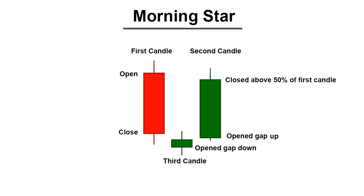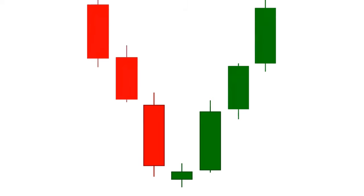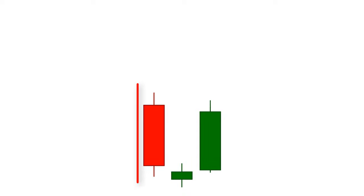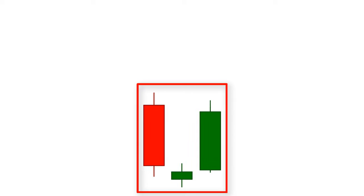Hey traders, welcome back to Easy Trading Tips. In this video tutorial, we will learn how to identify the perfect Morning Star candlestick pattern. The Morning Star candlestick pattern is a bullish reversal pattern consisting of three candlesticks that mark a potential short-term reversal from a downtrend to an uptrend. But not all Morning Star patterns can convert a downtrend to an uptrend — only a 100% perfect Morning Star pattern can. Today we will learn how to identify that pattern, so let's get started.